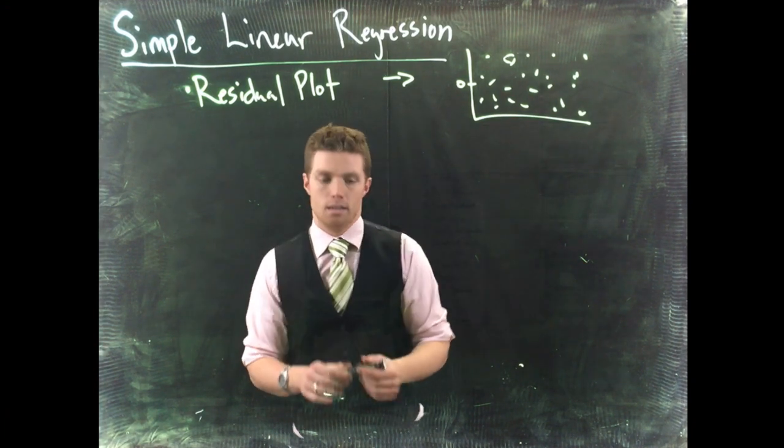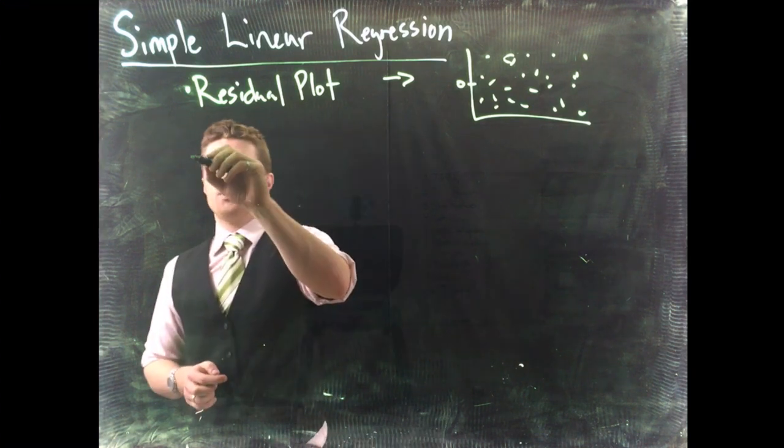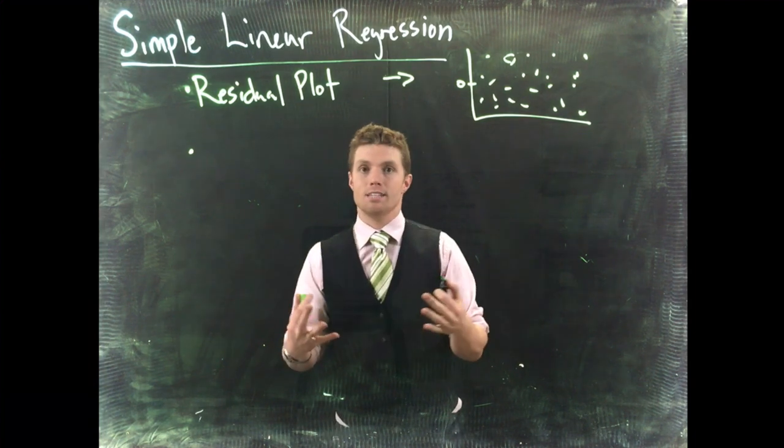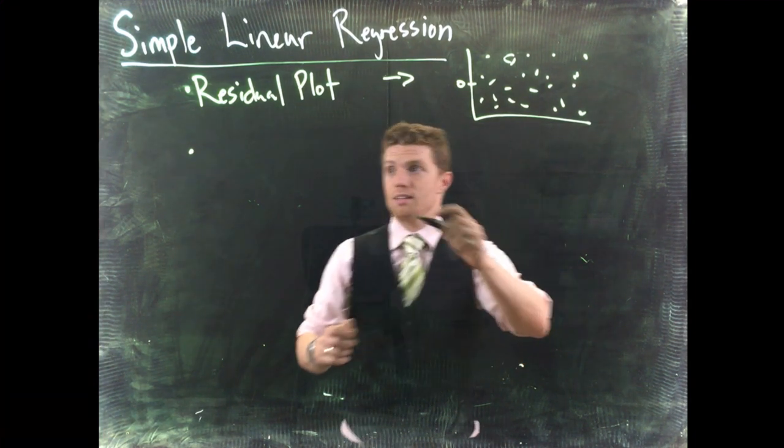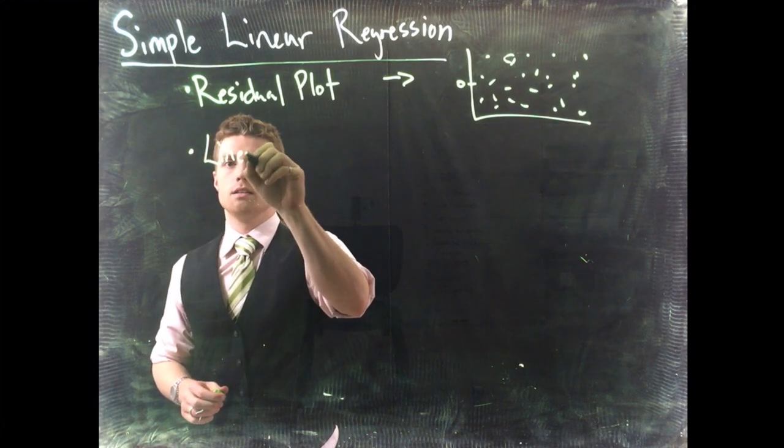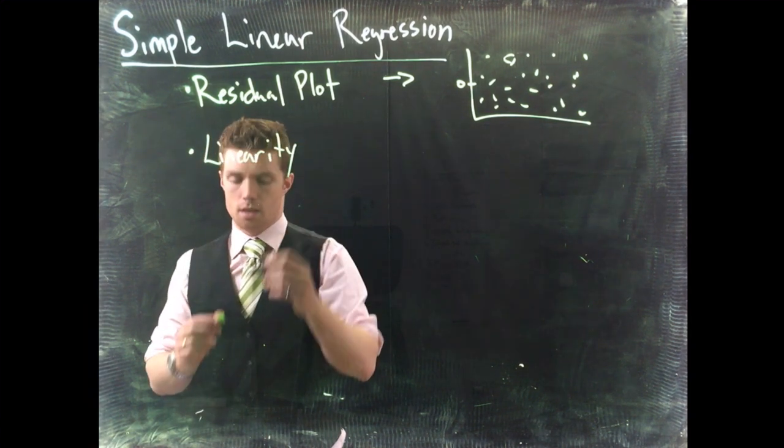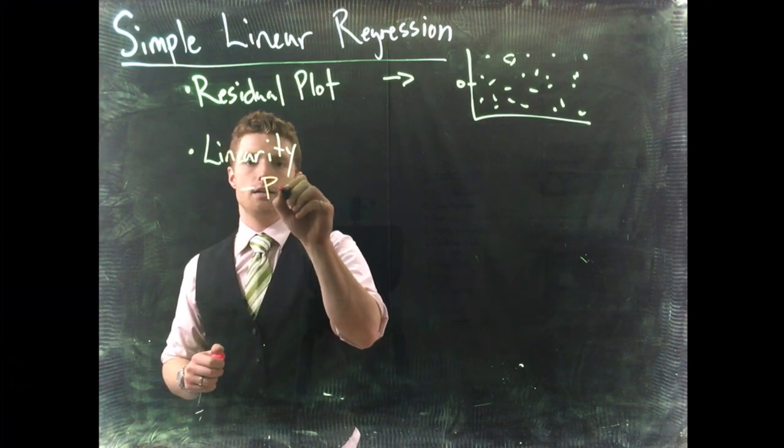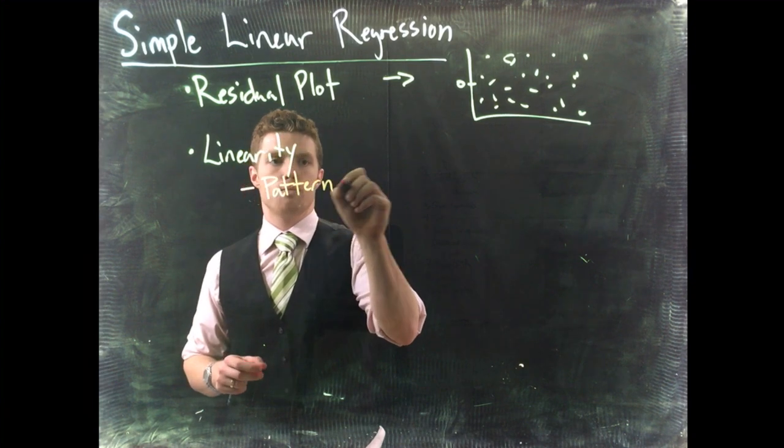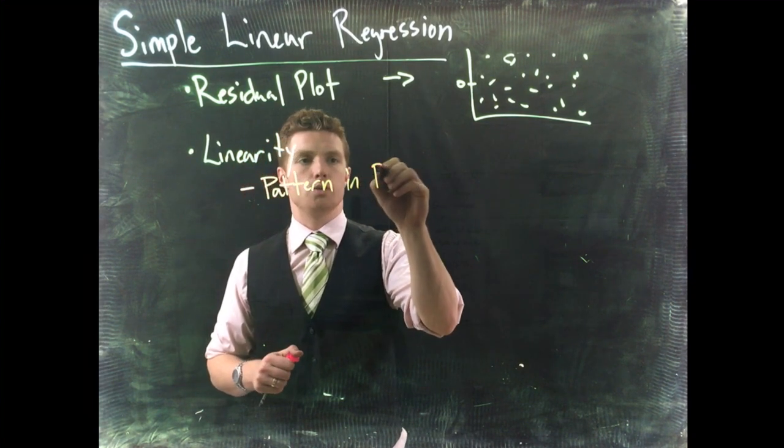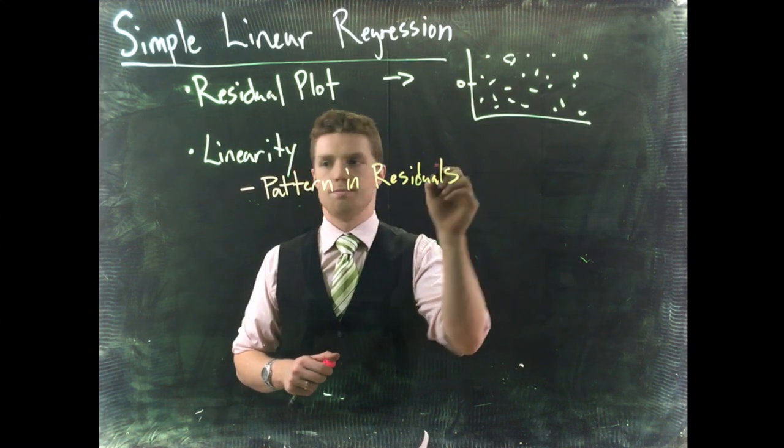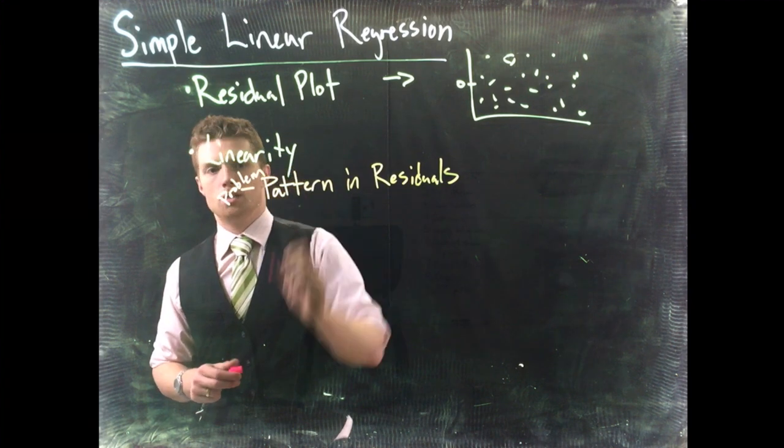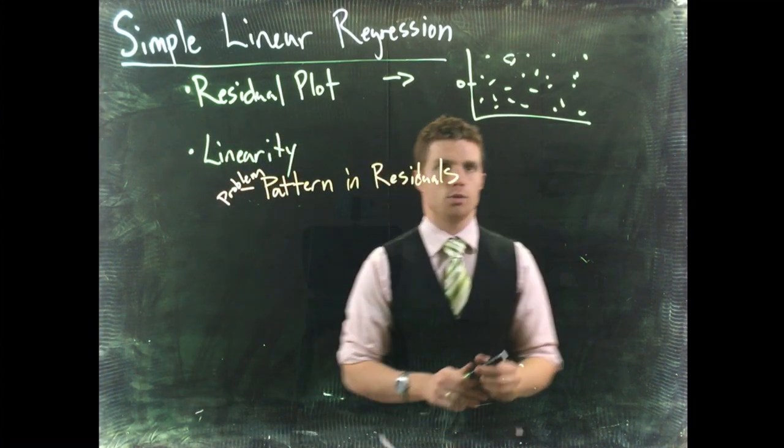First thing that we need to look for is that our residual plot, our data, needs to be linear. If our data is linear we get something like this. So we're looking for linearity. If we don't have linearity we are going to see a pattern in residuals. So this is a problem. If we have a problem we'd see a pattern in the residuals.